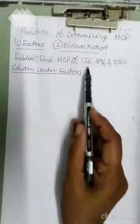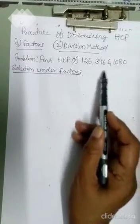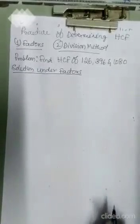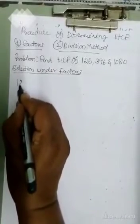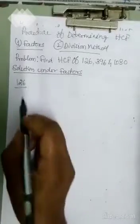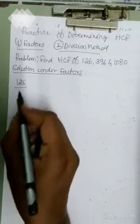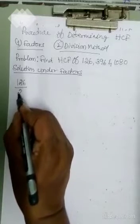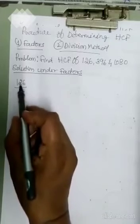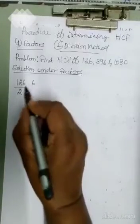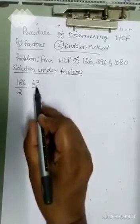In the factor method, we have to find out the factors for each number: 126, 396, and 1080. Factor means finding the numbers which divide the given number. So for 126, take the minimum number which can divide it — that is 2. How many times does it go? 126 divided by 2 is 63. 63 divided by 2: 3 is not divisible by 2.